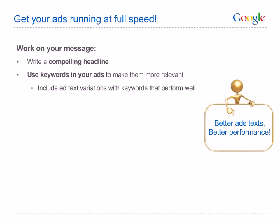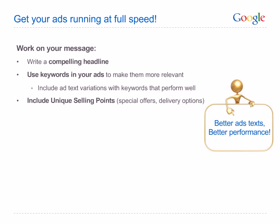Ask yourself: what are the specific or technical details about the product or service we provide? You can include this in your keywords and ad text. If you find that a keyword has performed well for you, try to include it in your ad text. You should also include unique selling points in your ad text to differentiate your ads from the competition. Some unique selling points are price and special offers, delivery options, or the option to order online. Ask yourself: why would someone choose my business over one of my competitors?